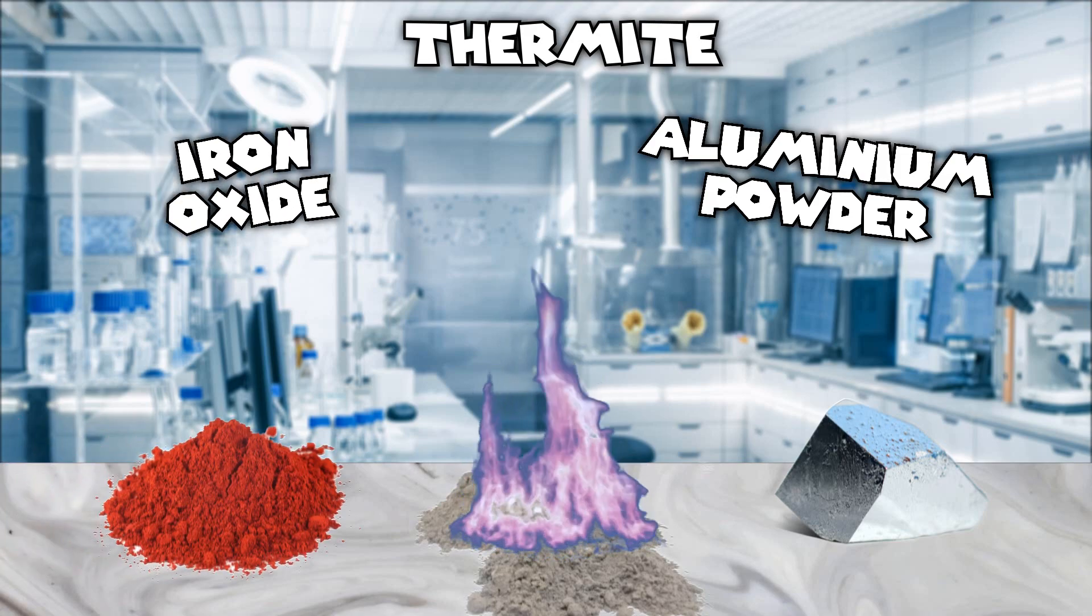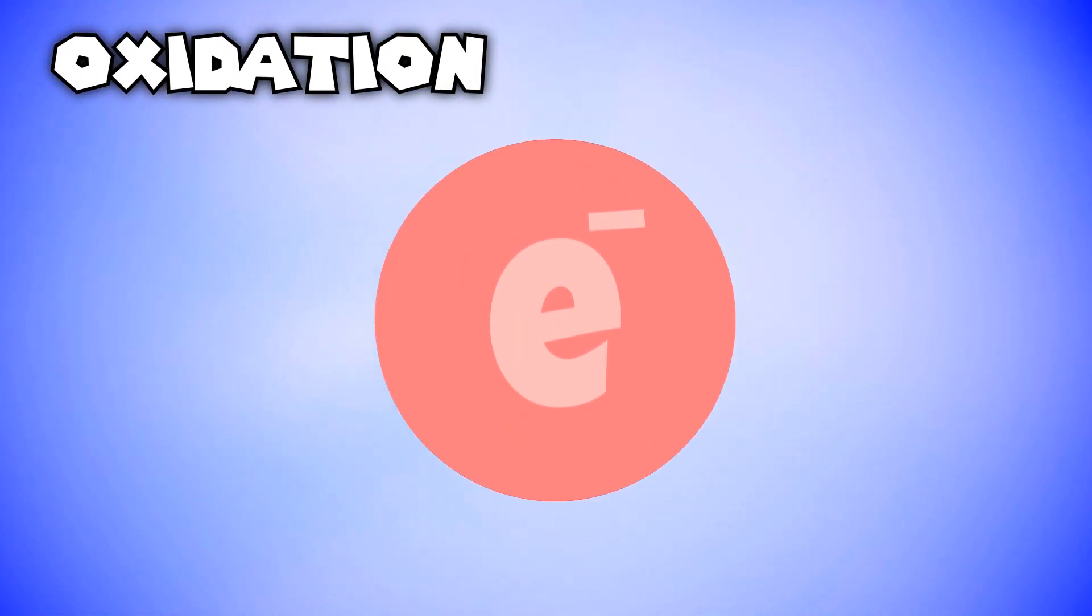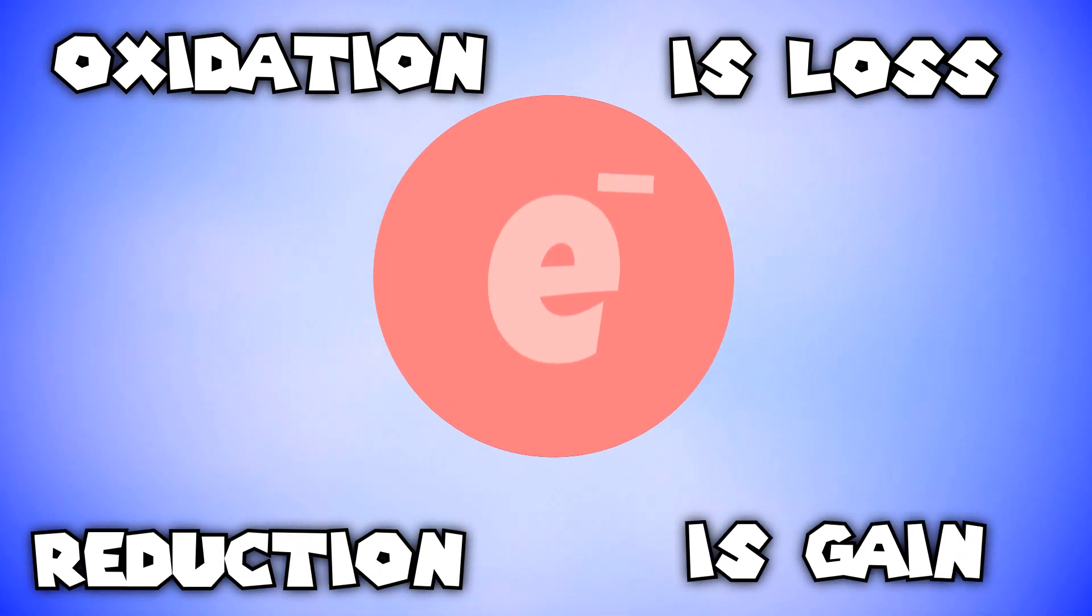It consists of a mixture of aluminum powder and iron oxides, otherwise known as rust, that when ignited undergoes an exothermic reduction oxidation or redox reaction.